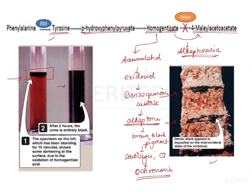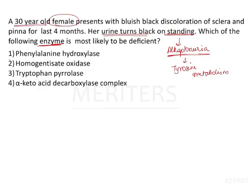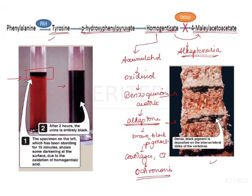This is the typical presentation because of the presence of alkapton bodies. The enzyme that is deficient is homogentisate oxidase, which is option 2. Regarding the other options: the first option says phenylalanine hydroxylase. In this metabolic pathway, the precursor of tyrosine is phenylalanine, and the hydroxylation of phenylalanine is catalyzed by phenylalanine hydroxylase.